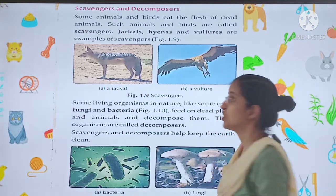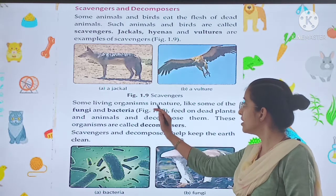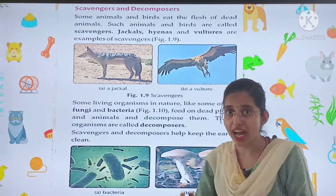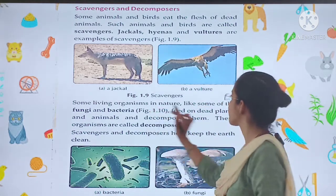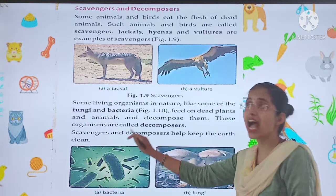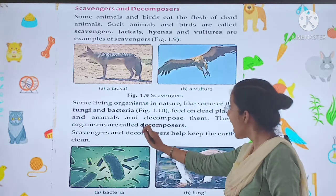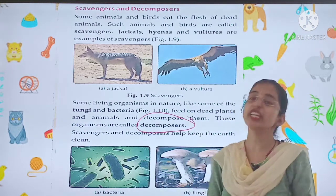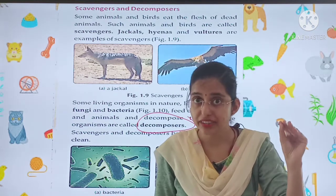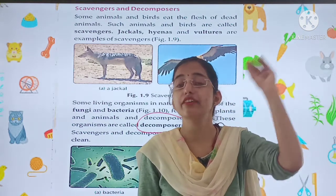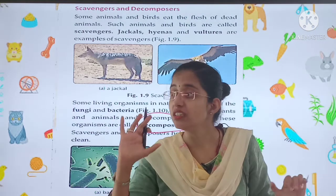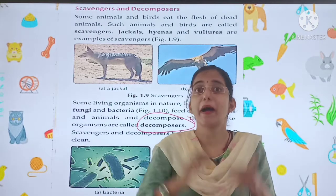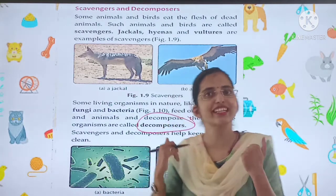Then comes decomposers. Some of these organisms in nature, like some of the fungi and bacteria, feed on dead plants and animals and decompose them. These organisms are called decomposers. There are certain bacteria and fungi which feed on dead animals and plants. There are so many arrangements by mother earth to keep herself clean.